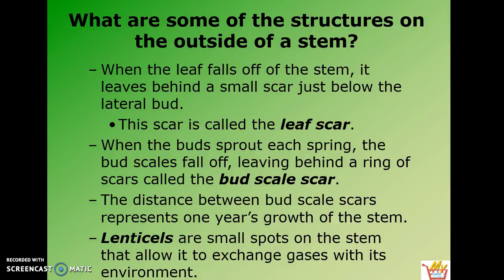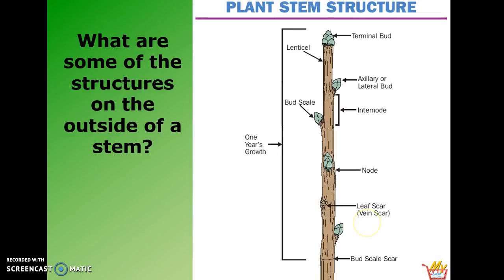You also found leaf scars — little tiny raised bumps where leaves had fallen off — and then when the bud scales fall off in the spring, you might find a ring of scars called a bud scale scar. Here is the picture you all used, and hopefully you were able to diagram your stem.